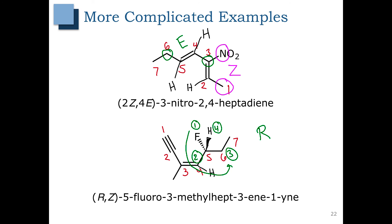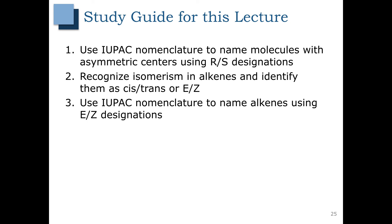Remember that we also had to specify where the ene and the yne are in our naming, because our double bond is at position three and our yne is at position one. This represents the end of the video for Inter Chapter C. Stop the video and do your clicker questions. Don't forget to check out the study guide for this lecture — we covered how to do both the RS system and the EZ system, so make sure you can do both for our next quiz.